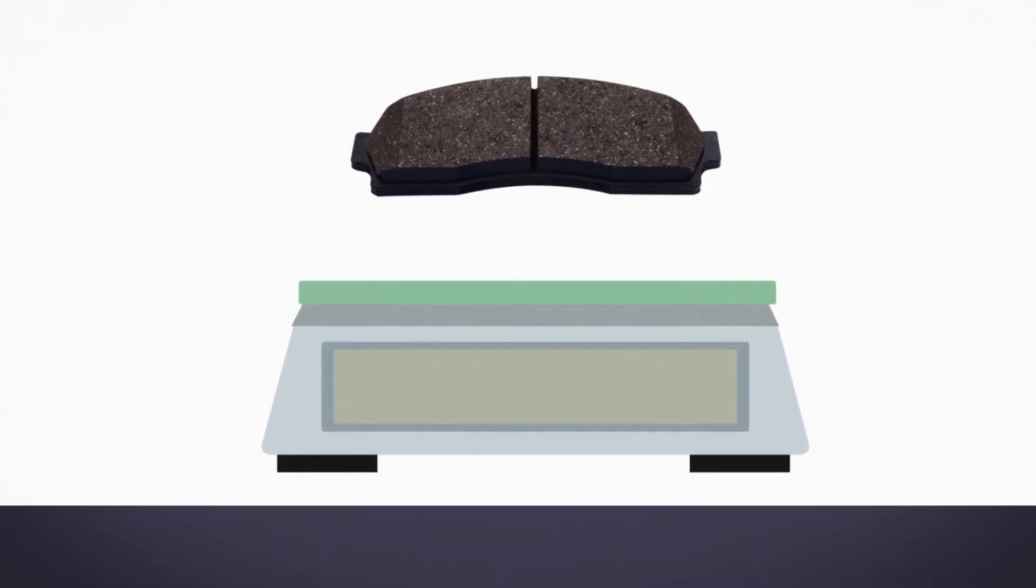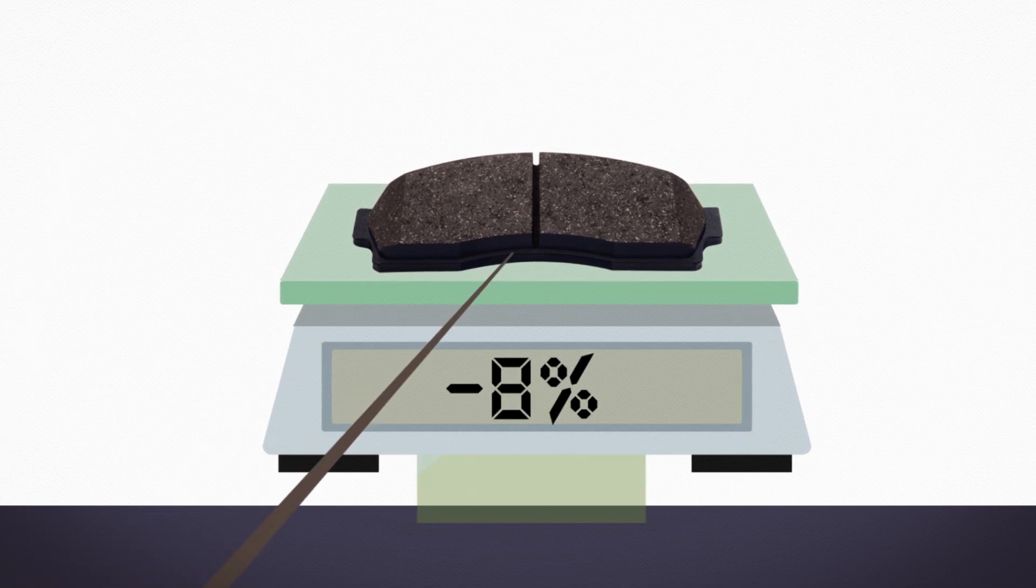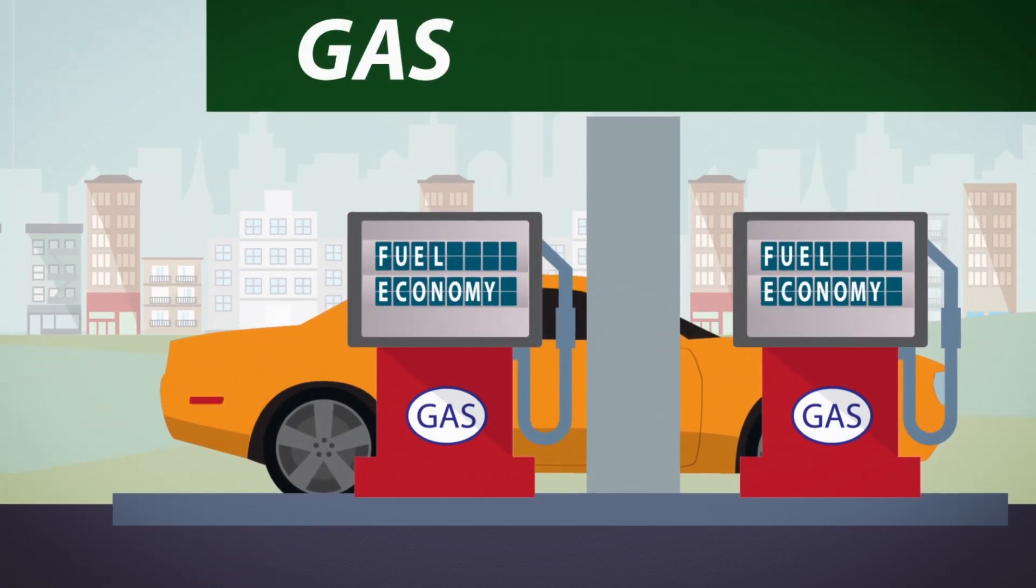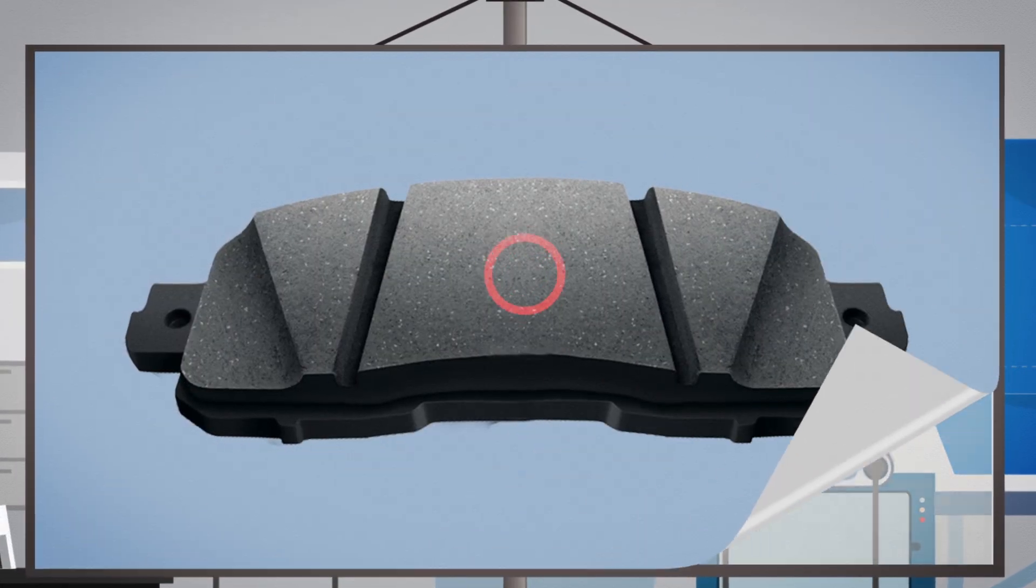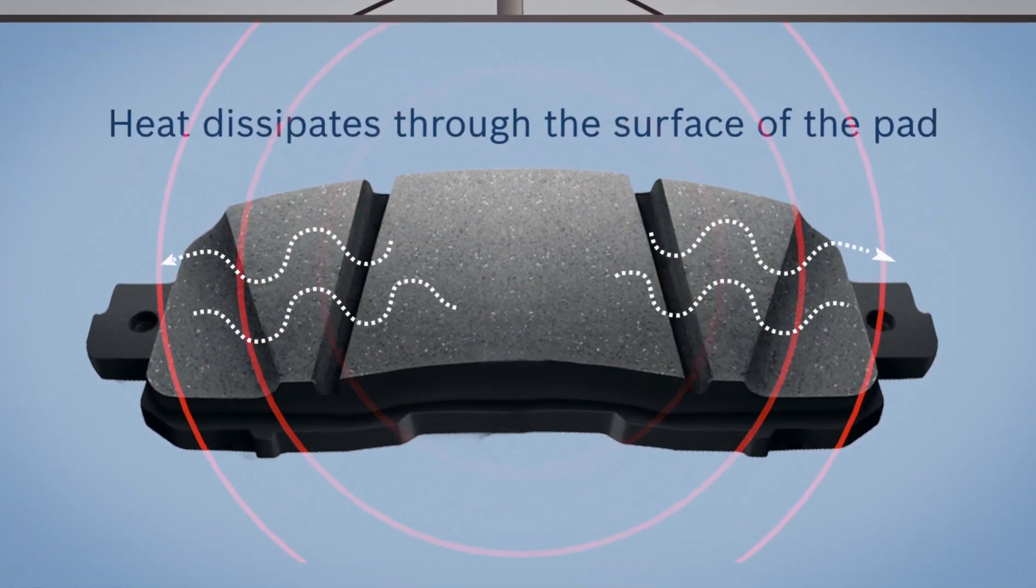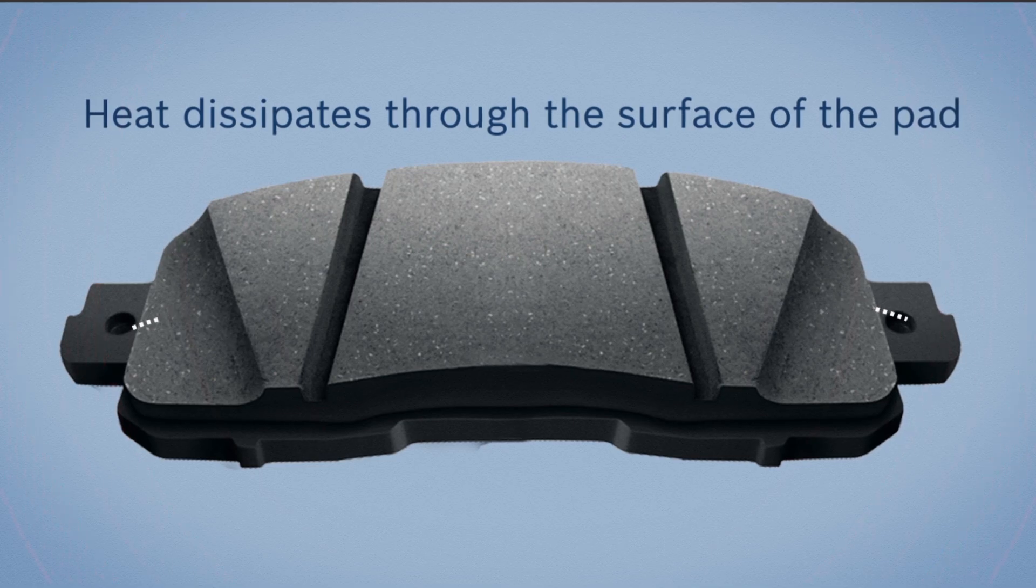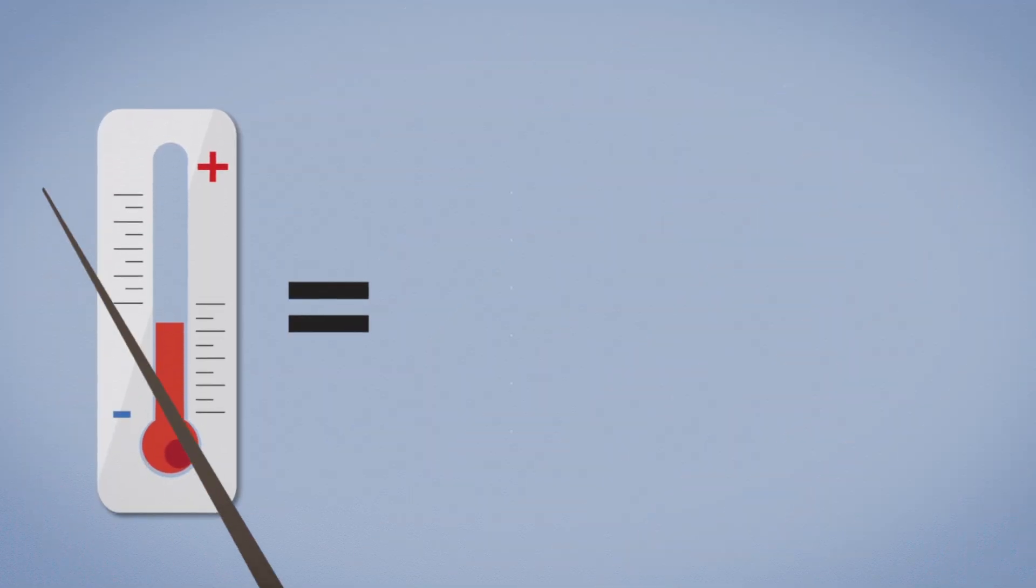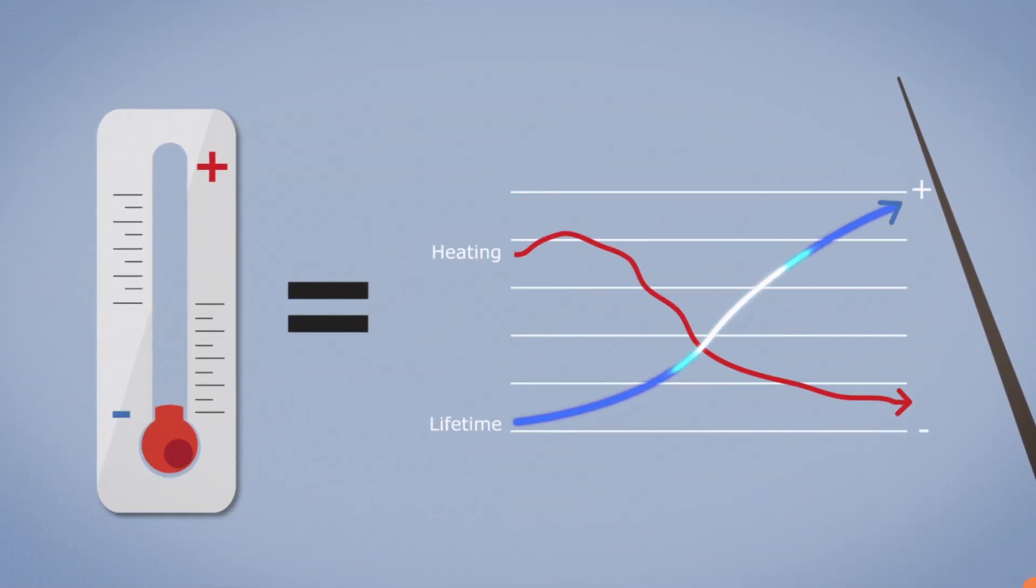It reduces the weight of the friction material by eight percent, and even a small reduction of weight contributes to increased fuel economy. As the aerospace alloy contains aluminum, it provides efficient heat dissipation on the surface of the pad. This prevents the surface of the pad and rotor from overheating, extending their lifetime.